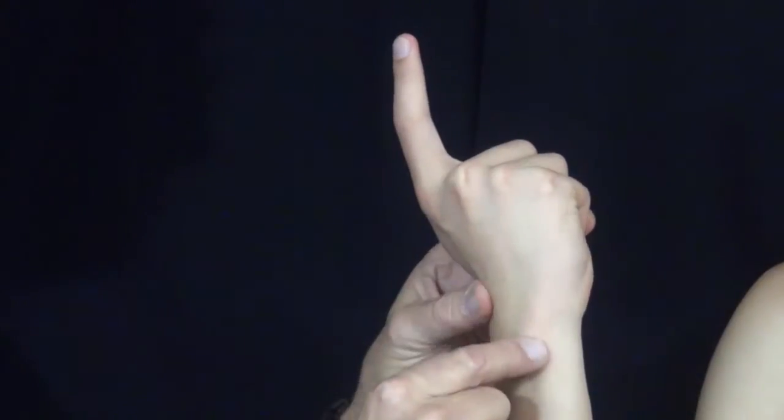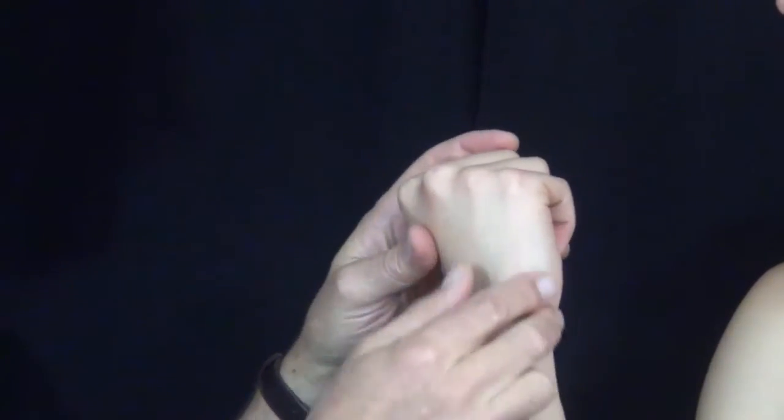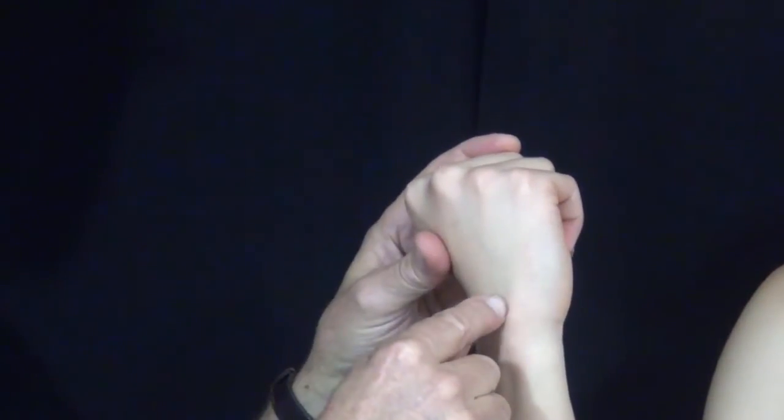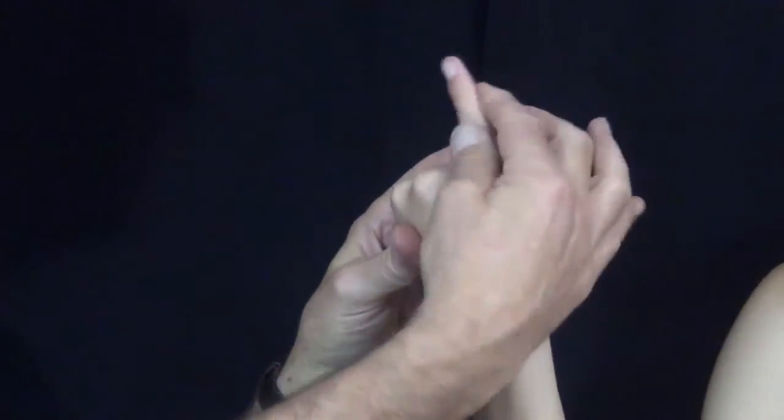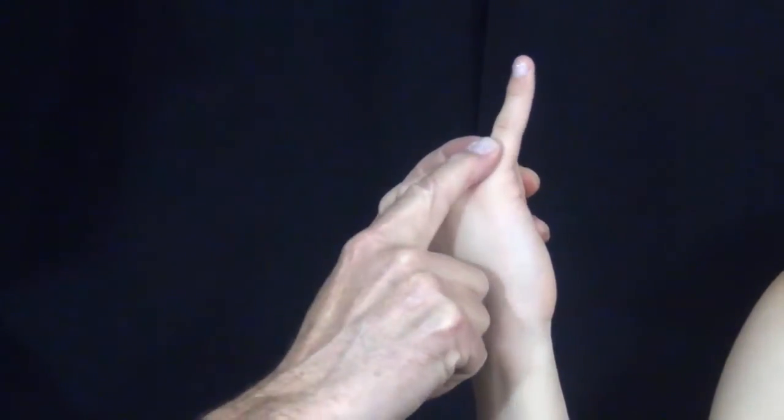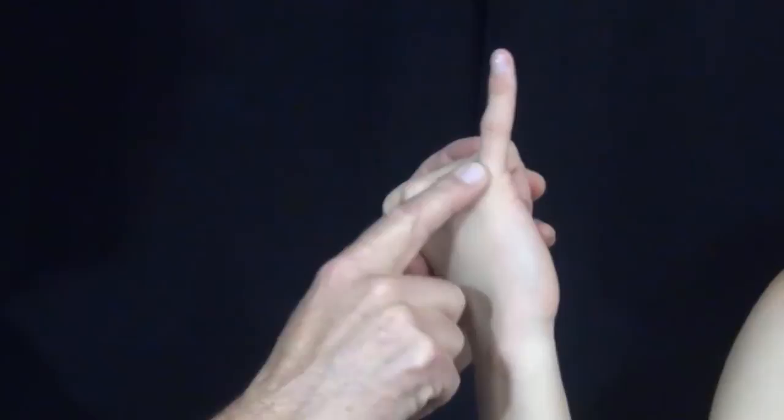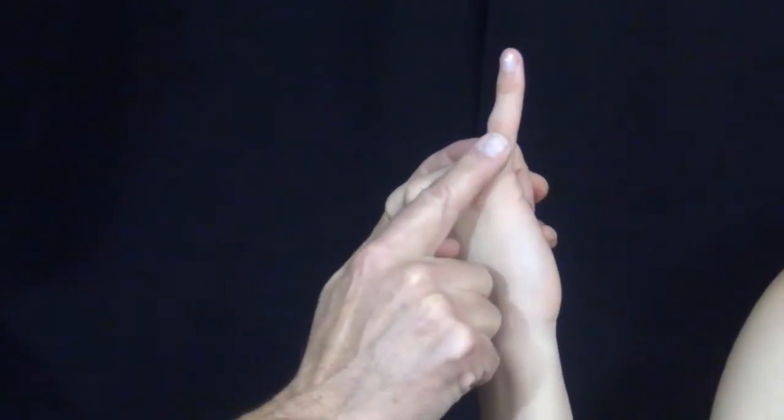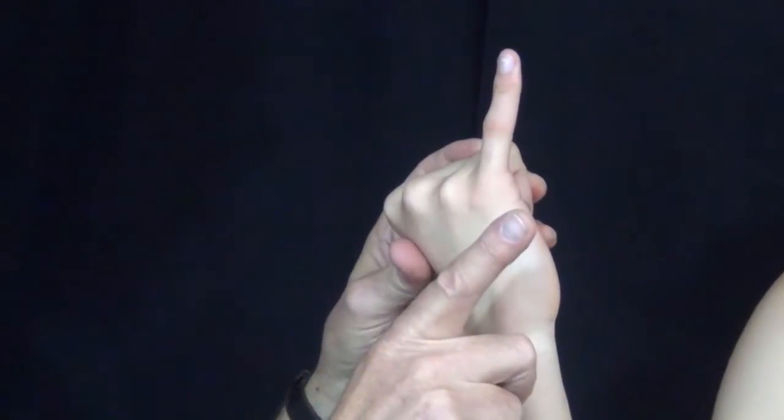The fifth compartment goes to the fifth finger and has the extensor digiti quinti, and that tendon does this. It allows us to stick our pinky up when we're drinking tea. It's an extra tendon because there's a fourth tendon from here that actually goes over there too, so you don't necessarily need to have that.